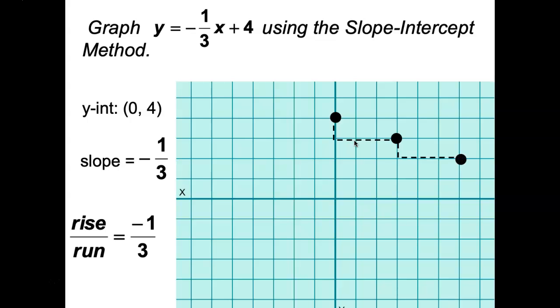Now I can just connect the points and draw a longer line. That is the graph of the line y equals negative one third x plus four.